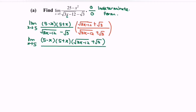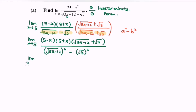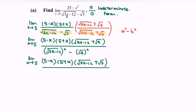Focus on the denominator: we have (a minus b) multiplied by (a plus b), so we apply the formula a squared minus b squared. So (square root of 3x minus 12) squared minus (square root of 3) squared gives us, taking the limit as x approaches 5, the expression (5 minus x)(5 plus x) times (square root of 3x minus 12 plus square root of 3) over (3x minus 12 minus 3).